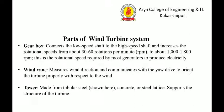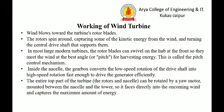...1000 to 1800 rotations per minute. Wind vane — measures wind direction and communicates with the yaw drive to orient the turbine properly. Tower — made from tubular steel, concrete, or steel lattice; it supports the structure of the turbine.